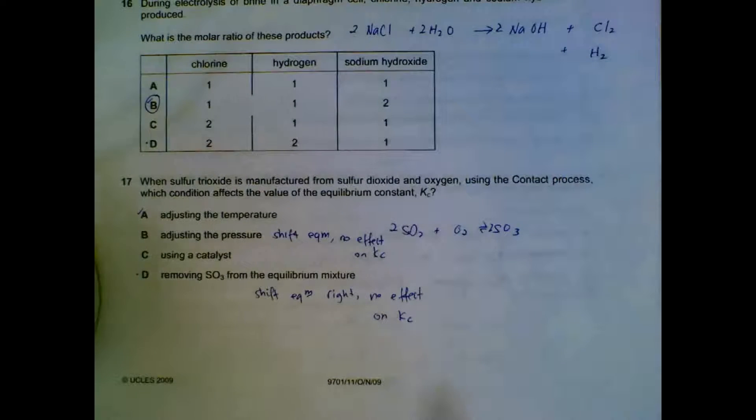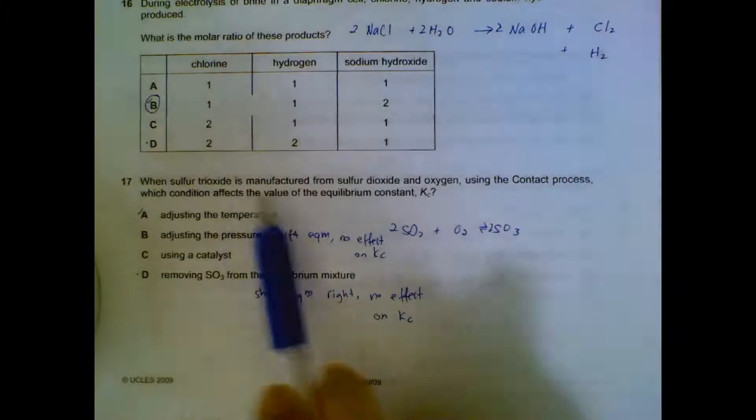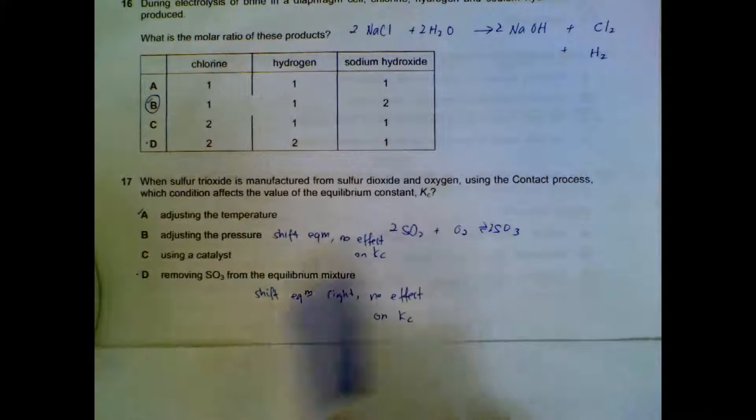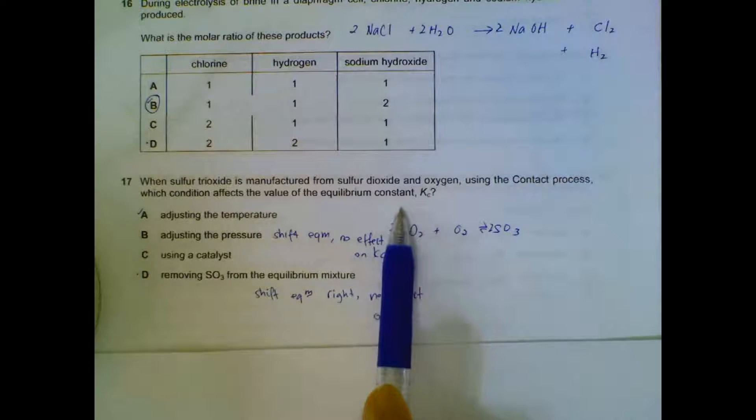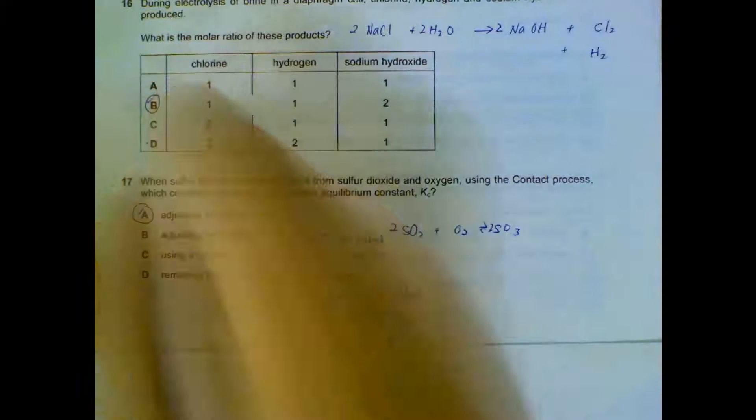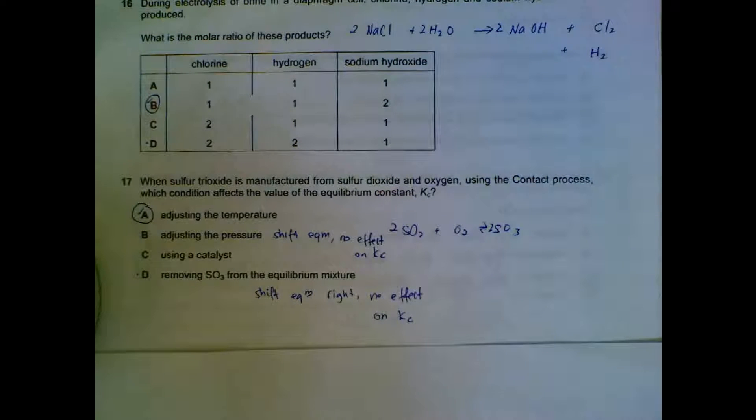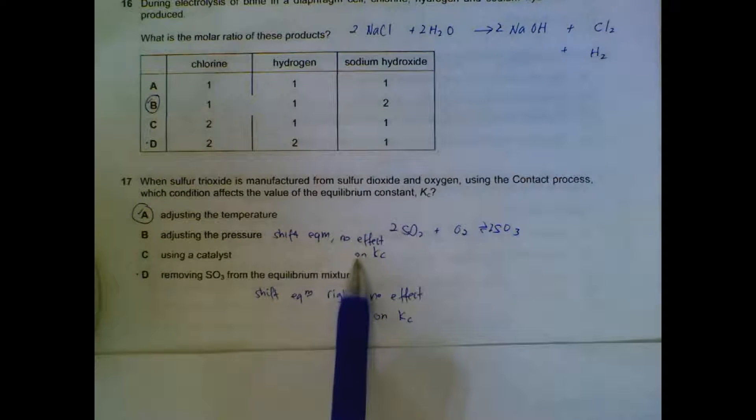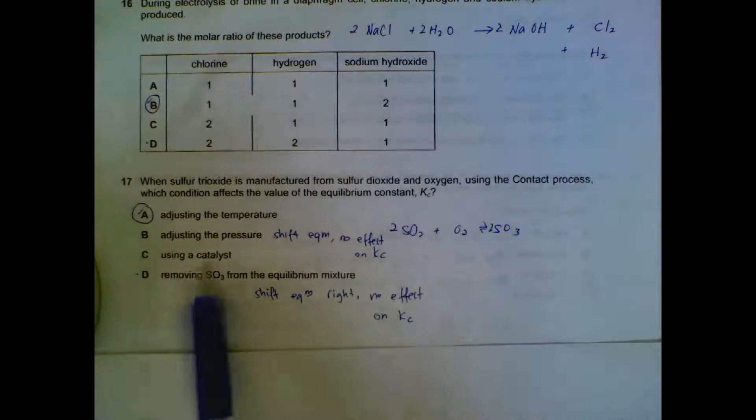Question 17, using the contact process. What conditions affect the value of Kc? As mentioned just now, Kc and Kp will be affected by temperature changes. So adjusting the temperature will affect the Kc. Changing the pressure will just shift the equilibrium but have no effect on Kc. Using a catalyst, no effect - you will just allow equilibrium to be achieved faster.